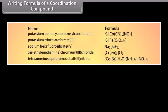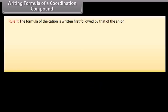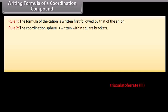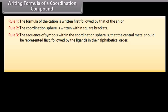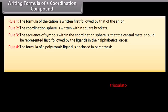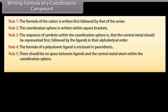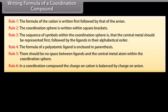Writing the Formula of a Coordination Compound. When the name is given, the following rules apply: Rule 1: The formula of the cation is written first, followed by the anion. Rule 2: The coordination sphere is written within square brackets. Rule 3: The central metal is represented first, followed by ligands in alphabetical order. Rule 4: The formula of a polyatomic ligand is enclosed in parentheses. Rule 5: There should be no space between ligands and the central metal atom within the coordination sphere. Rule 6: The charge on the cation is balanced by the charge on the anion.